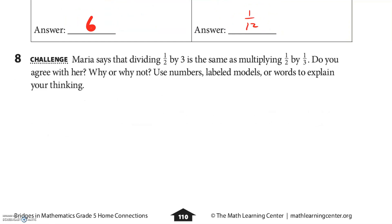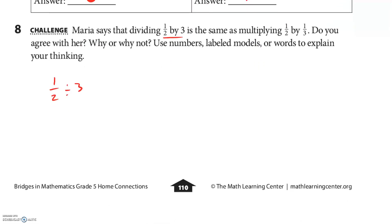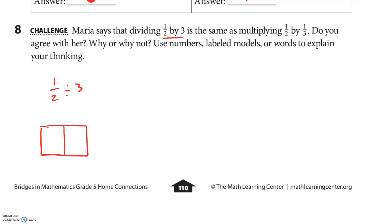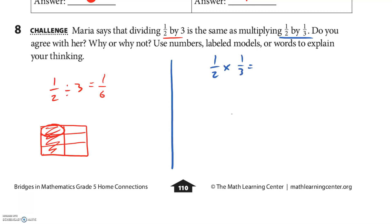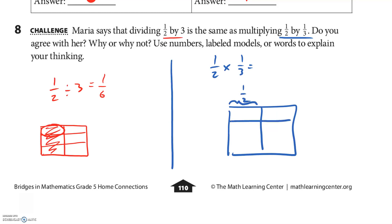Maria says that dividing 1 half by 3 is the same as multiplying 1 half by 1 third. Do you agree? Let's just do the problems. 1 half divided by 3 — here's 1 half, divided by 3 — equals 1 sixth. And then 1 half times 1 third — here's 1 half, and then 1 third — also 1 sixth. So in theory, yes, they are the same.